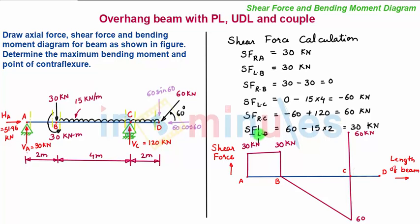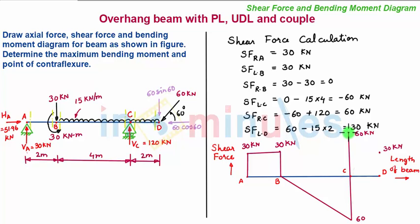Now moving towards point D, the shear force at point D is 30 kN, so over point D we plot a positive 30 kN point. Between points C and D, there is again a uniformly distributed load, so the variation will be linear. We join them with a straight inclined line.